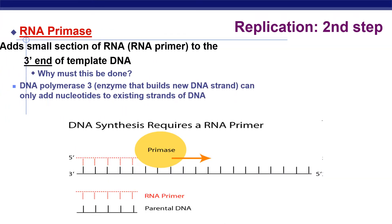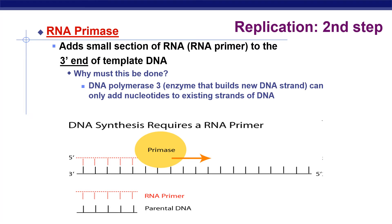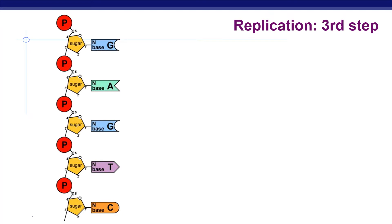The second step involves RNA primase, which adds a small section of RNA — an RNA primer — to the 3 prime end of the template DNA. This must be done because DNA polymerase III, the enzyme that builds the new DNA strand, can only add nucleotides to an existing strand. The requirement for a free 3 prime hydroxyl group is fulfilled by RNA primers synthesized at the initiation site.